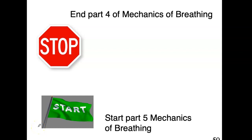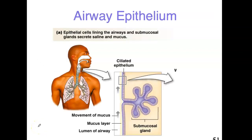Hi guys, and welcome to part 5 of Mechanics of Breathing. In this section, we're going to talk about the airway epithelium. This is a diagram of that epithelium shown in the trachea. This is a ciliated epithelium, and it has a very important function. It needs to trap dust particles and other things in that mucus, and we have to be able to cough those and remove them.